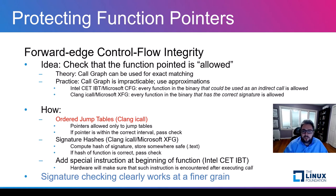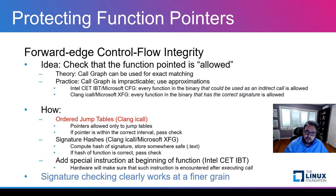For signature-based checks, Clang uses an ordered jump table. The idea is to create a jump table for every function in the binary and order the table by function type. A function pointer will be allowed only if it points to an address in the correct interval. Another option, used in some cases by Clang and by XFG, is to compute the hash of the signature and store it at the beginning of the function, so before performing the jump we verify the signature hash is correct. If you only want to make sure we're pointing to any function, you can add a special instruction or data at the beginning of each function, which is what Intel CET does.